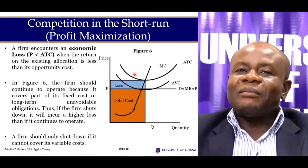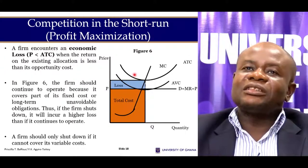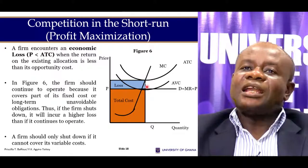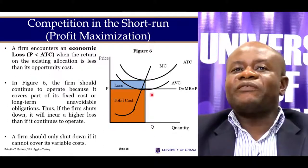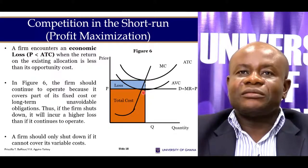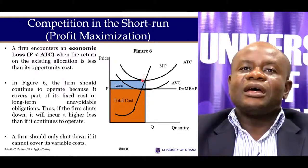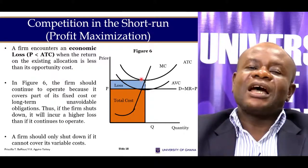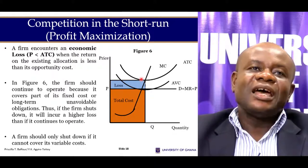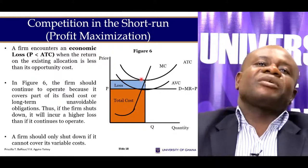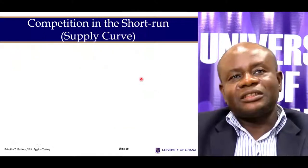The firm can also make losses. At the point where the firm maximises profit, the cost per unit lies above the price. Hence the firm is making losses — and these are economic losses.